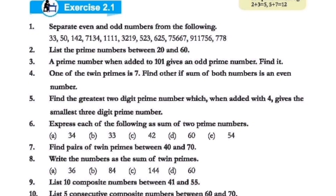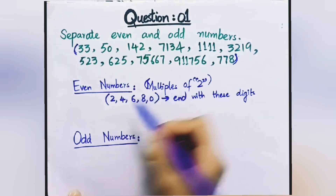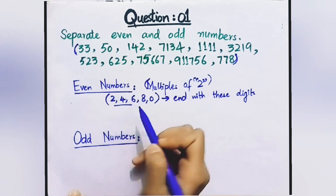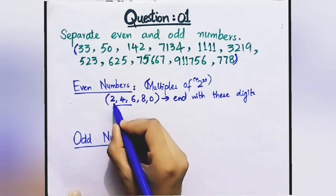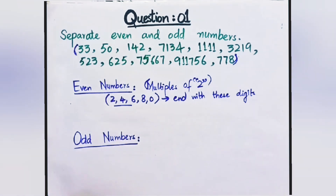Separate even and odd numbers. You have a list given in this question and you have to separate even and odd numbers. Even numbers are multiples of 2. Any number whose last digit is 2, 4, 6, 8, or 0 is an even number.